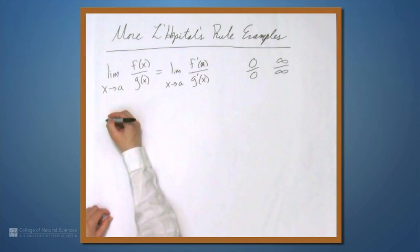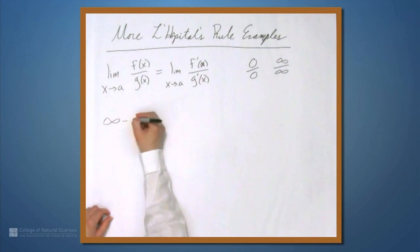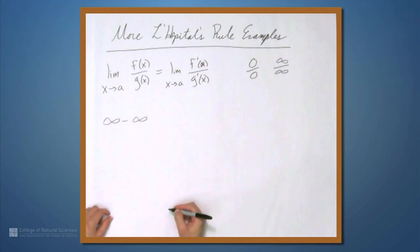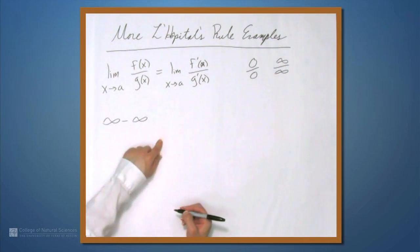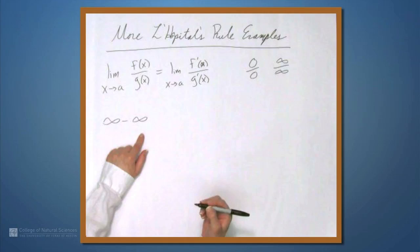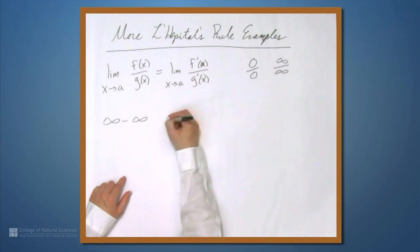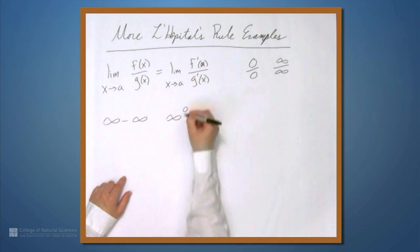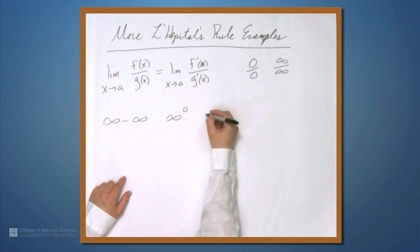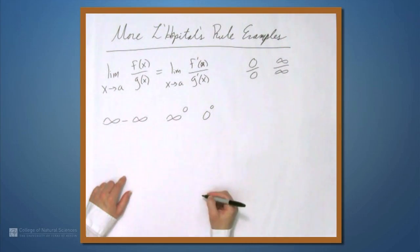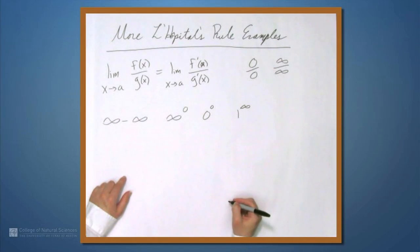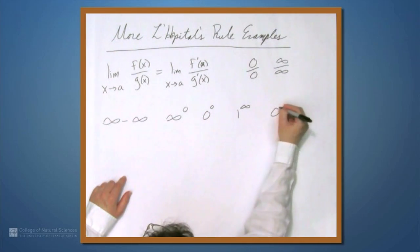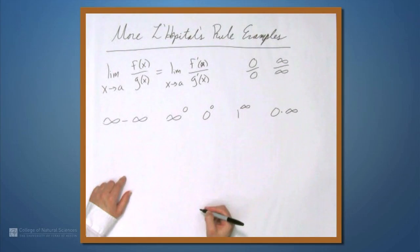But those aren't the only indeterminate forms. If you have something that ends up giving you infinity minus infinity, well, we don't know what that is. It could be x minus x, which would be 0, or it could be 2x minus x, which would be infinity. Some other indeterminate forms are: infinity to the 0, 0 to the 0, 1 to the infinity, and 0 times infinity.